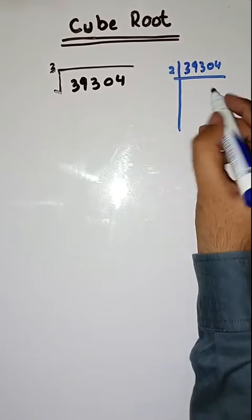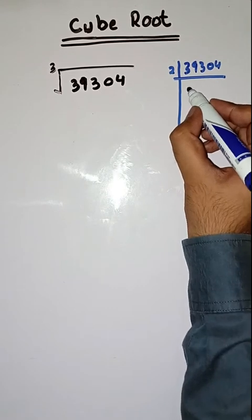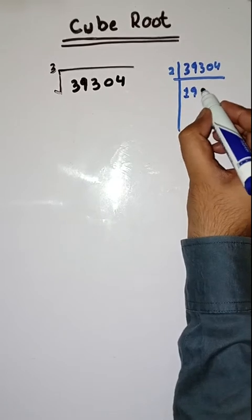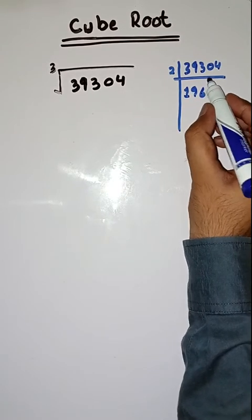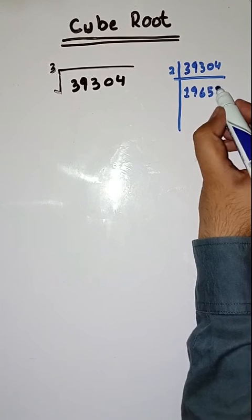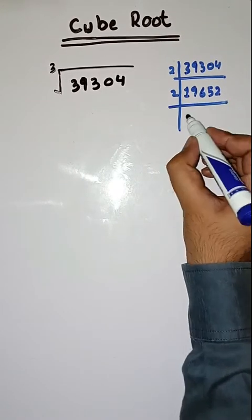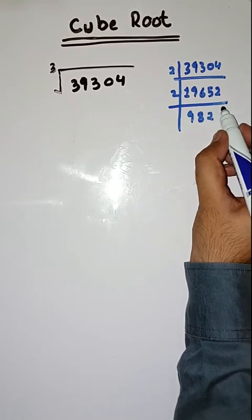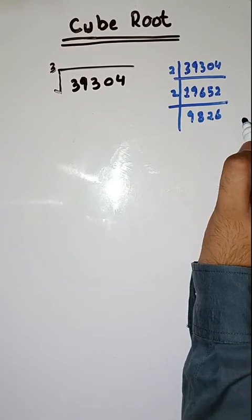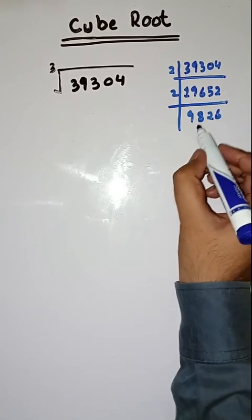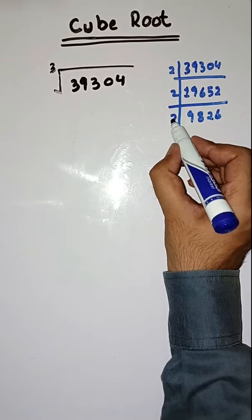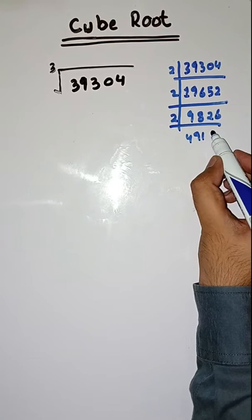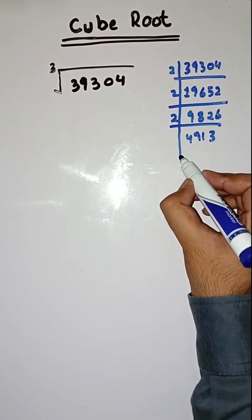We will start with 2 because it is an even number. So let's start dividing 39304 by 2 repeatedly, continuing the division step by step until we can no longer divide by 2.